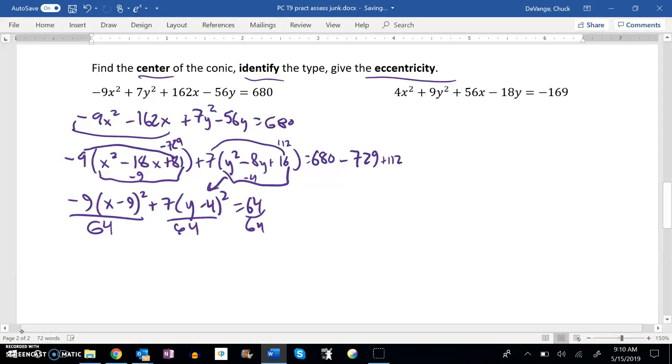That makes this 64 over 64. That leaves me a 7. So negative x minus 9 squared over 7 plus, that leaves me 9, y minus 4 squared over 9 equals 1.